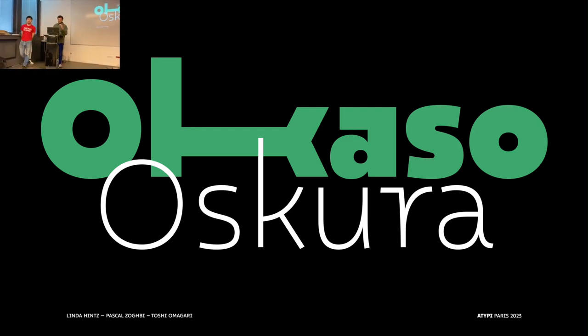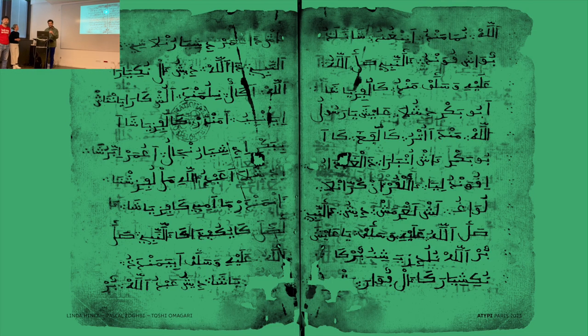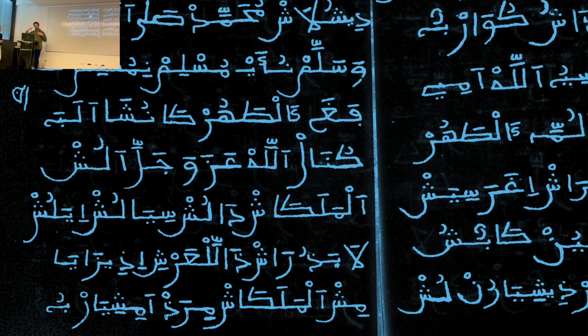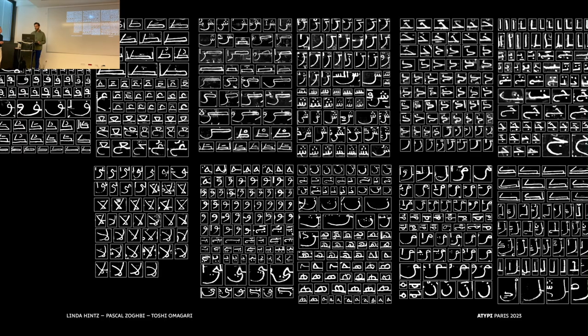The Ocaso project started with research in Spain about Aljamiado manuscripts — very old manuscripts found in Spain that are Spanish written in Arabic. They are a very unique kind of script because they use the Andalusian Kufi in a very vernacular way. When I started researching this project I had to find a way to analyze these manuscripts and put myself in the mind of the person writing them — not master calligraphers, but people living in Spain — and decide how to translate it into modern typography.